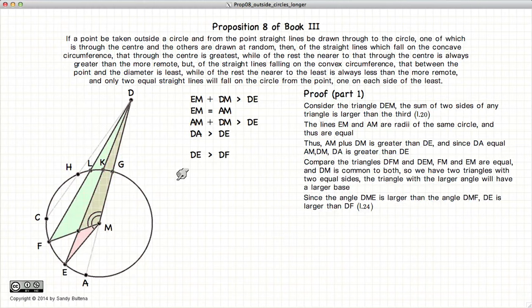Now if we look at the pink triangle and the green triangle, FM is equal to EM, excuse me, because they're both radii of the same circle. Both triangles have a common line, DM. So according to Proposition 24 of Book 1, the base of the triangle will be larger for the triangle that has the larger angle. So the angle in the pink triangle is larger. So the base of the pink triangle, ED, will be larger than FD, because this angle is larger than that angle.